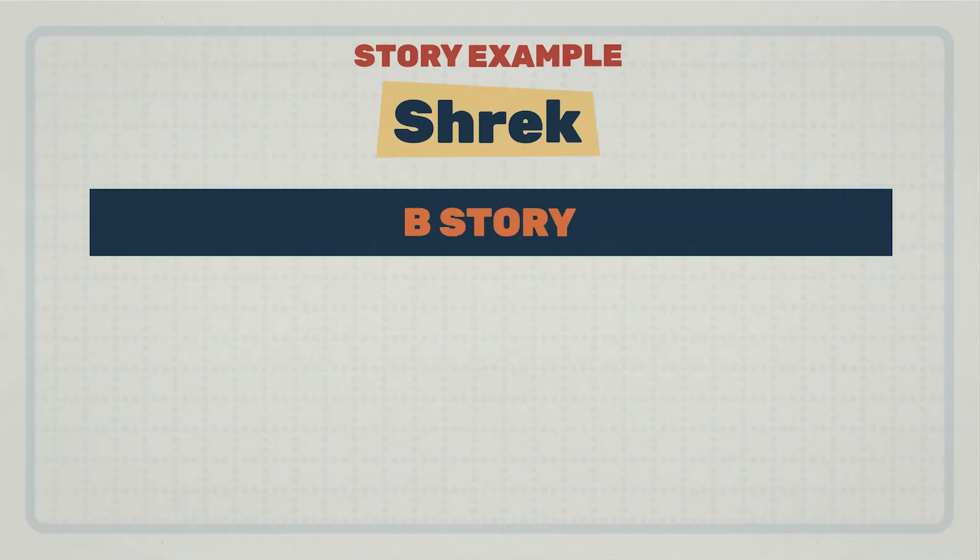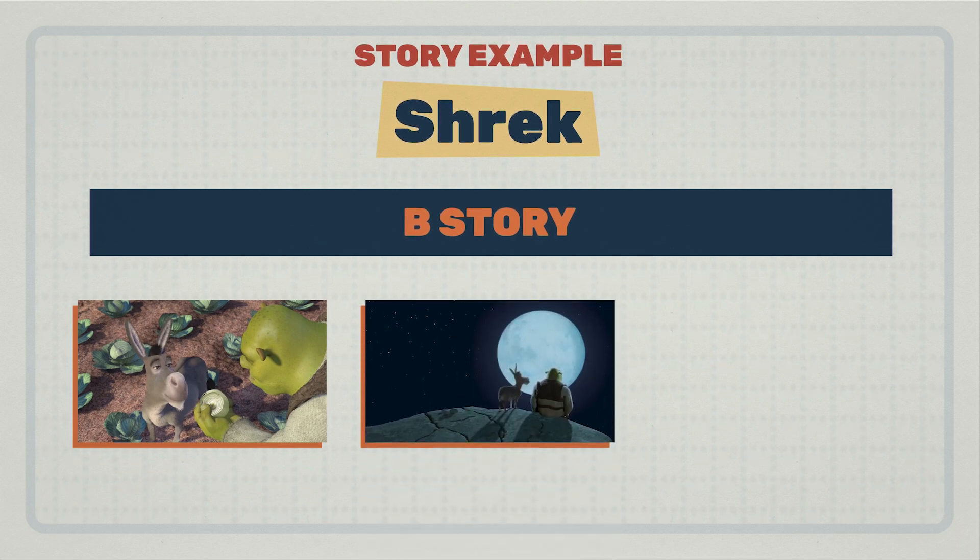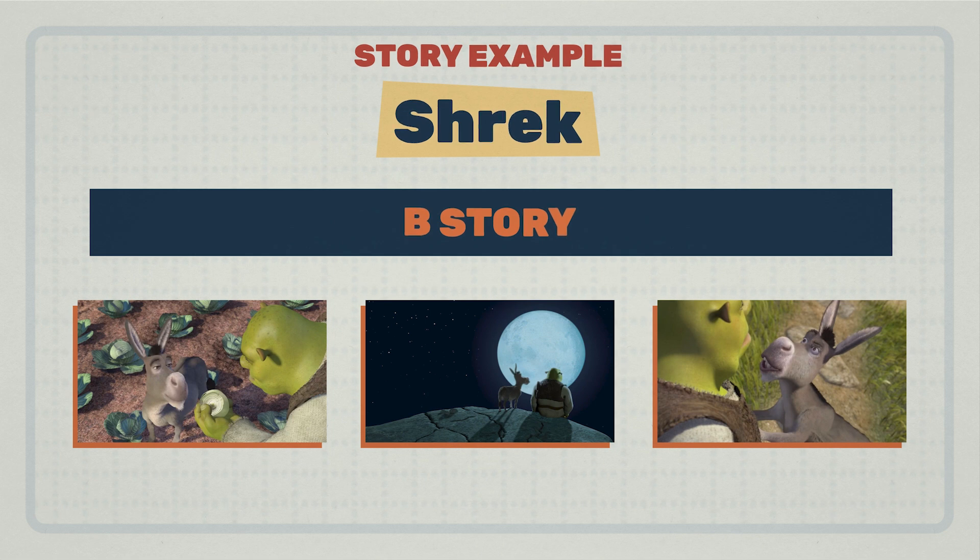To understand, let's revisit our favorite ogre, Shrek. The B-story describes actual moments in the story, like when Shrek talks to Donkey about how ogres are like onions, or when the two have a heart-to-heart under the stars, or when Donkey confronts Shrek in his swamp for being a bad friend. These are all moments we can point to that are part of the B-story, but the theme is about what all those moments are expressing.